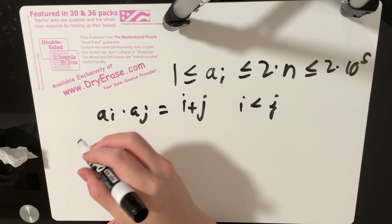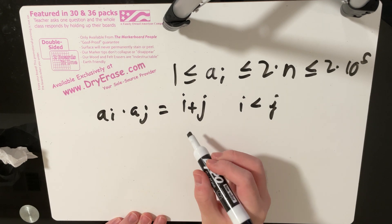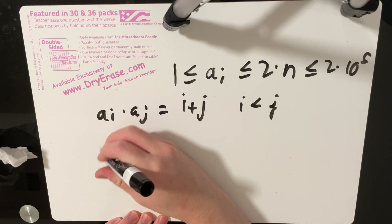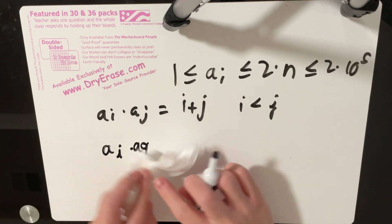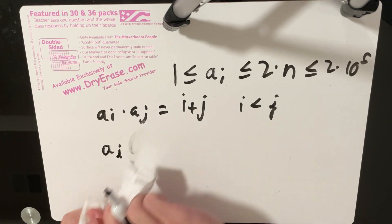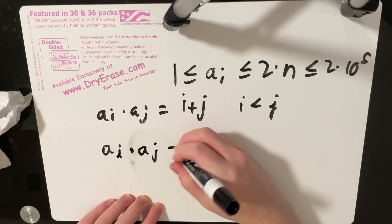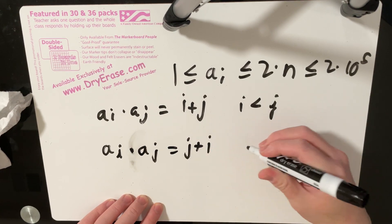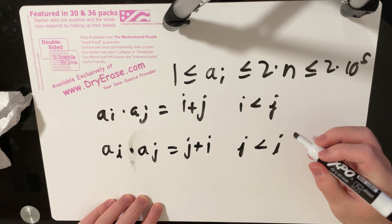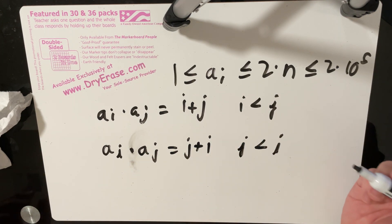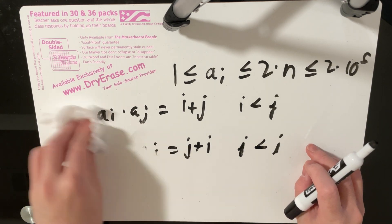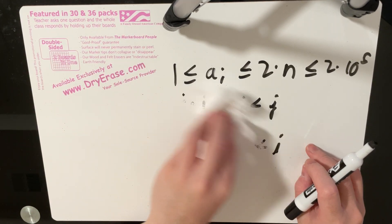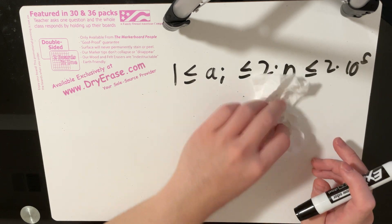But if ai was strictly greater than aj, then what we would essentially be counting is we would be considering the pair such that it's j plus i and then j is less than i. And this is essentially the same thing. All you're doing is just switching the variables. So by this observation, you can realize that the order of the array elements don't matter at all.